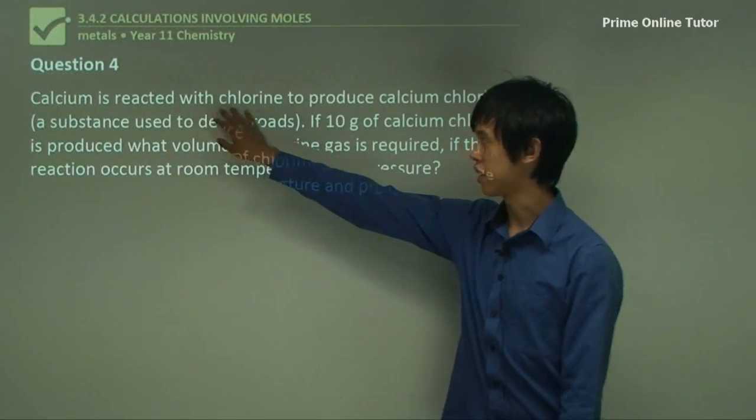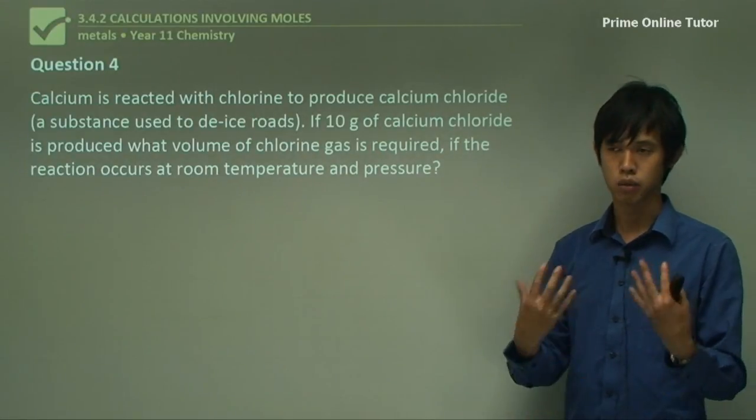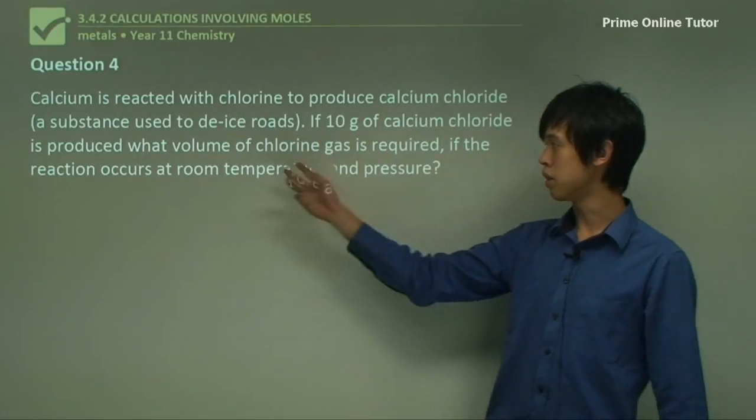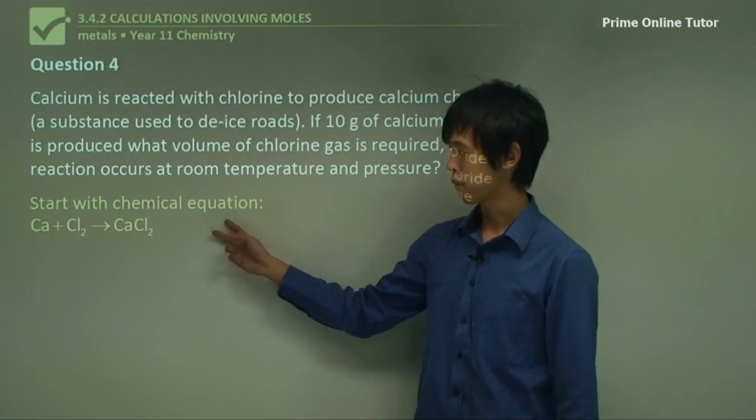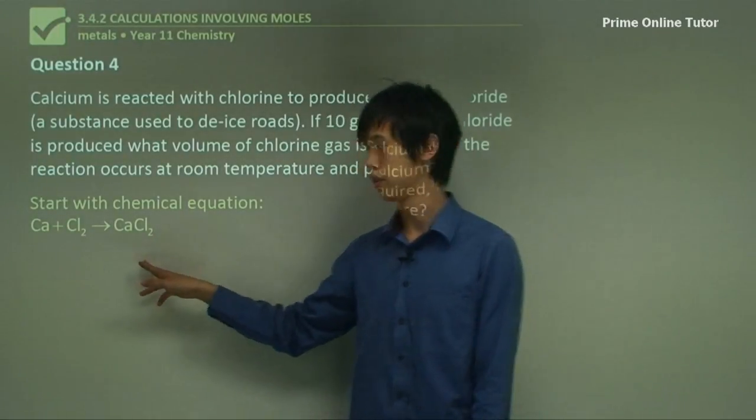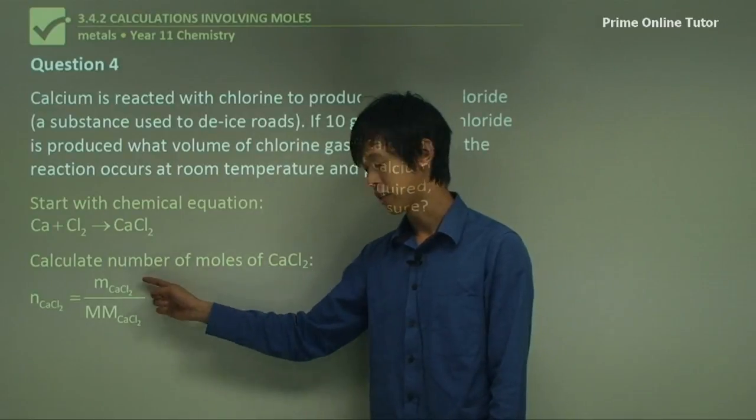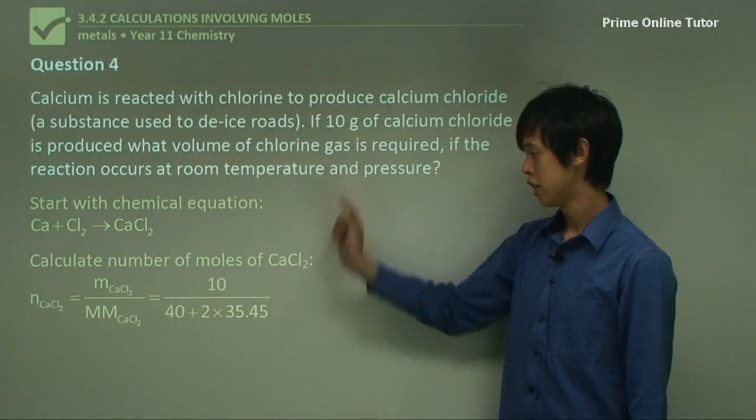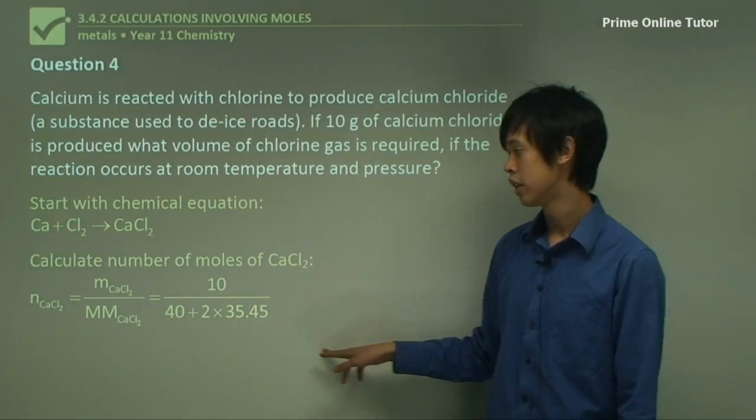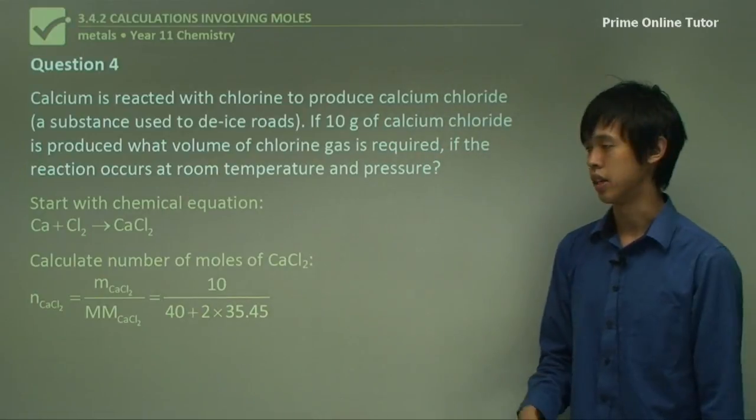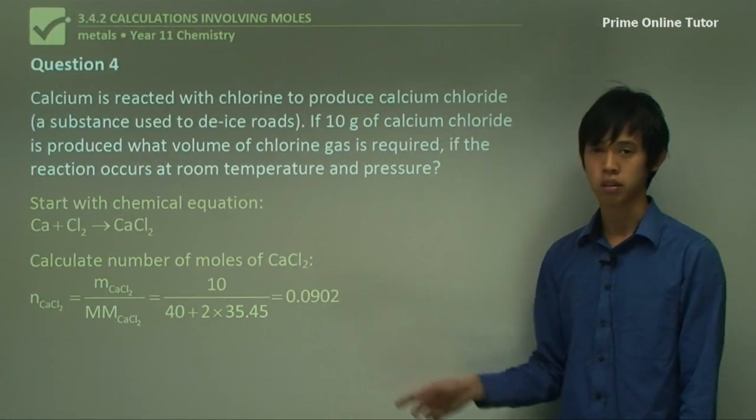Question 4. Calcium reacts with chlorine to produce calcium chloride. Calcium chloride is used to de-ice roads. If 10 grams of calcium chloride is produced, what volume of chlorine gas is required if the reaction occurs at room temperature and pressure? So we start with a chemical equation: Ca + Cl₂ forms CaCl₂. Then you calculate the number of moles of CaCl₂. It's just mass over molar mass. 10 comes from the question. And these two numbers come from your periodic table. So 40 is calcium and 35.45 is chlorine, multiplied by 2 because there are two chlorines in the molecule. And that gives you an answer of 0.0902 moles of calcium chloride.